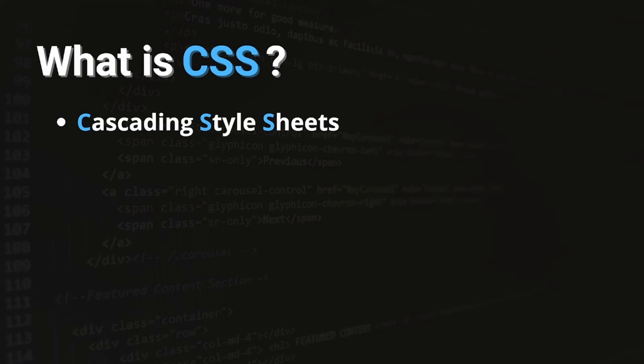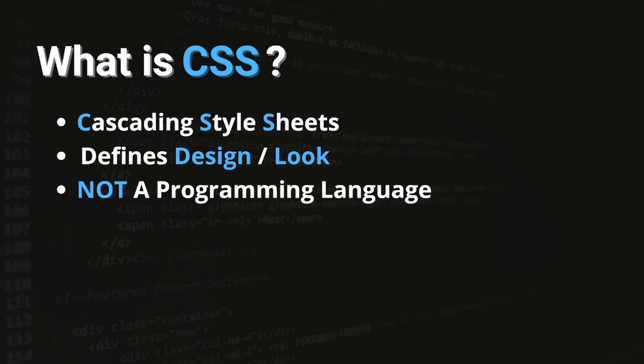CSS stands for Cascading Style Sheets. It defines the look and design of the web page, and you can also change the layout of elements. CSS is not a programming language — it's a styling language, just like HTML is a markup language. JavaScript will be a programming language; this one is not. We'll be using CSS to bring some magic to our site and make it look pretty.